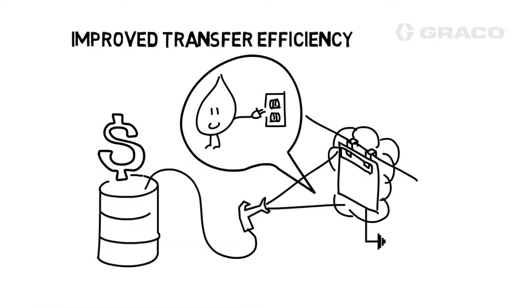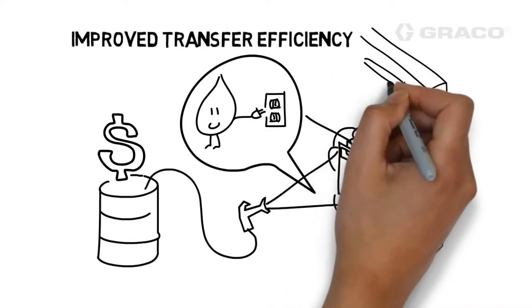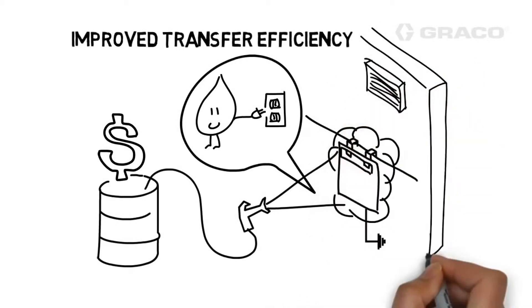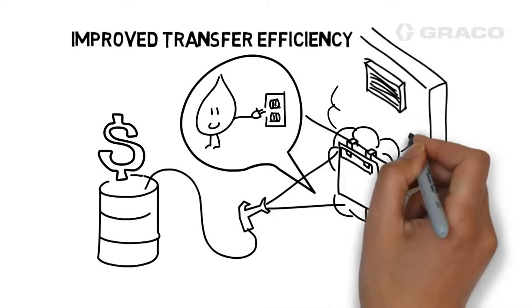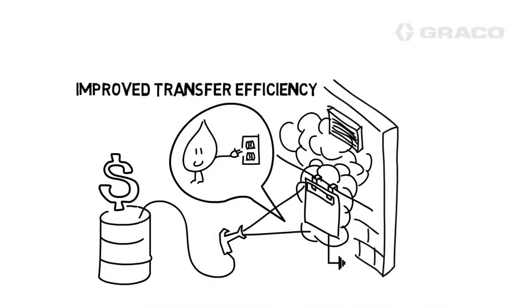This improvement in transfer efficiency can be measured in several ways. First is the savings in paint cost. If more paint is going on the part, less paint overall is being used in the process. So if paint consumption goes down, the initial cost of purchasing paint will also go down.